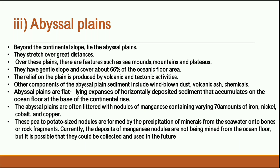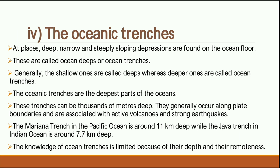Manganese nodules containing up to 70% iron, nickel, and cobalt are found on abyssal plains. These potato-sized nodules are formed by precipitation of minerals from seawater onto rock fragments. Currently, manganese deposits in the abyssal plains are not being mined because it is very difficult, but in the future they could be collected and used.